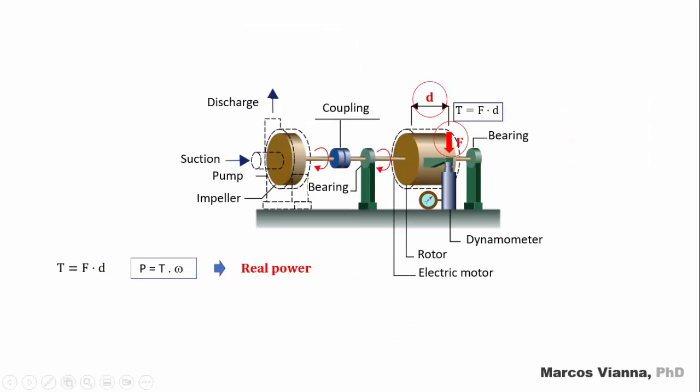To find its value, we must perform some laboratory tests. Observe this pump connected to an electric motor. The pump is fixed to a base. The electric motor is not. It remains attached to the system, fixed by two supports containing bearings. Thus, it could rotate freely around its axis.